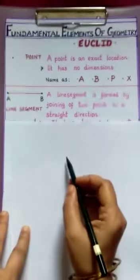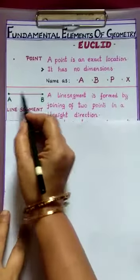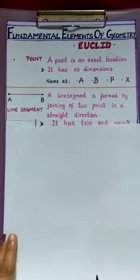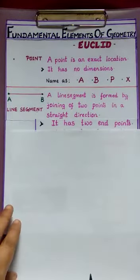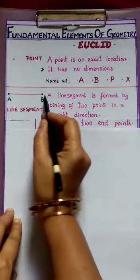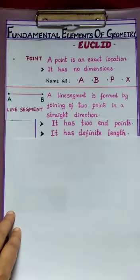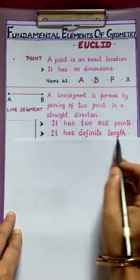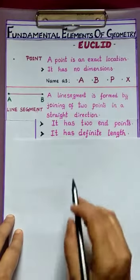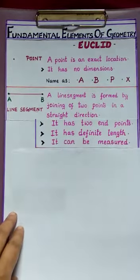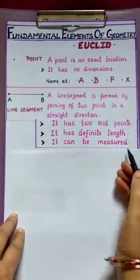So how many end points do we have for line segment? Here, one and here, one. So line segment has two end points. As we know both ends, it has definite length. As line segment has definite length, it can be measured.